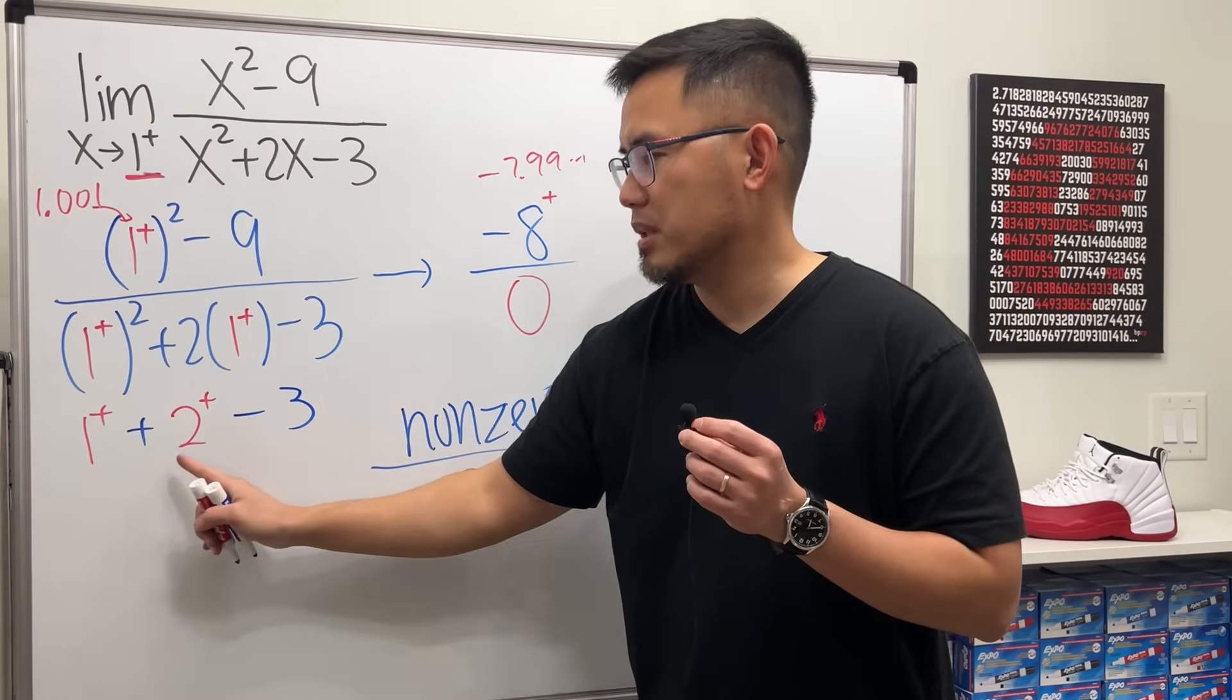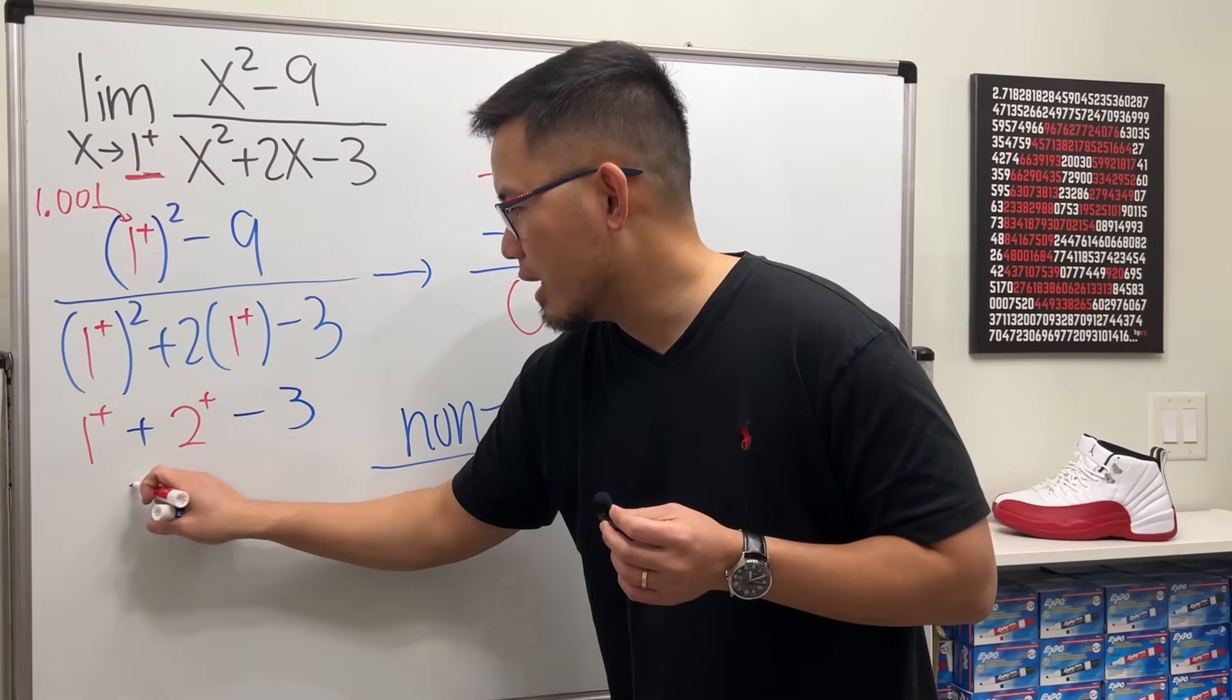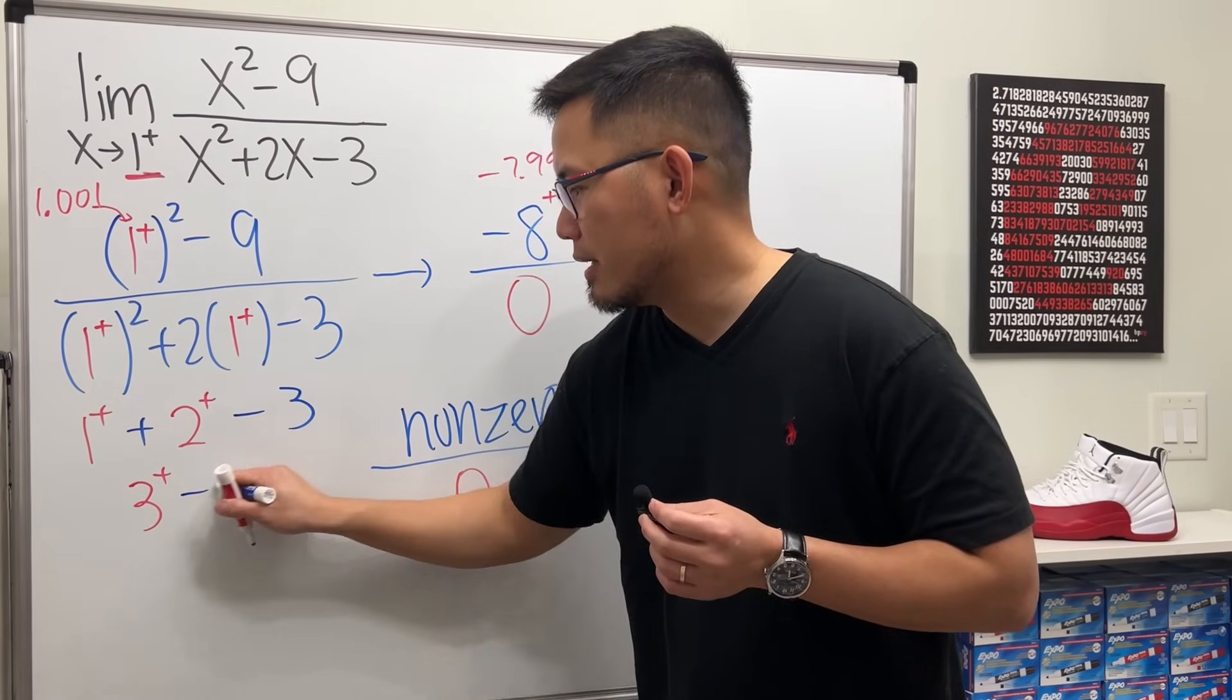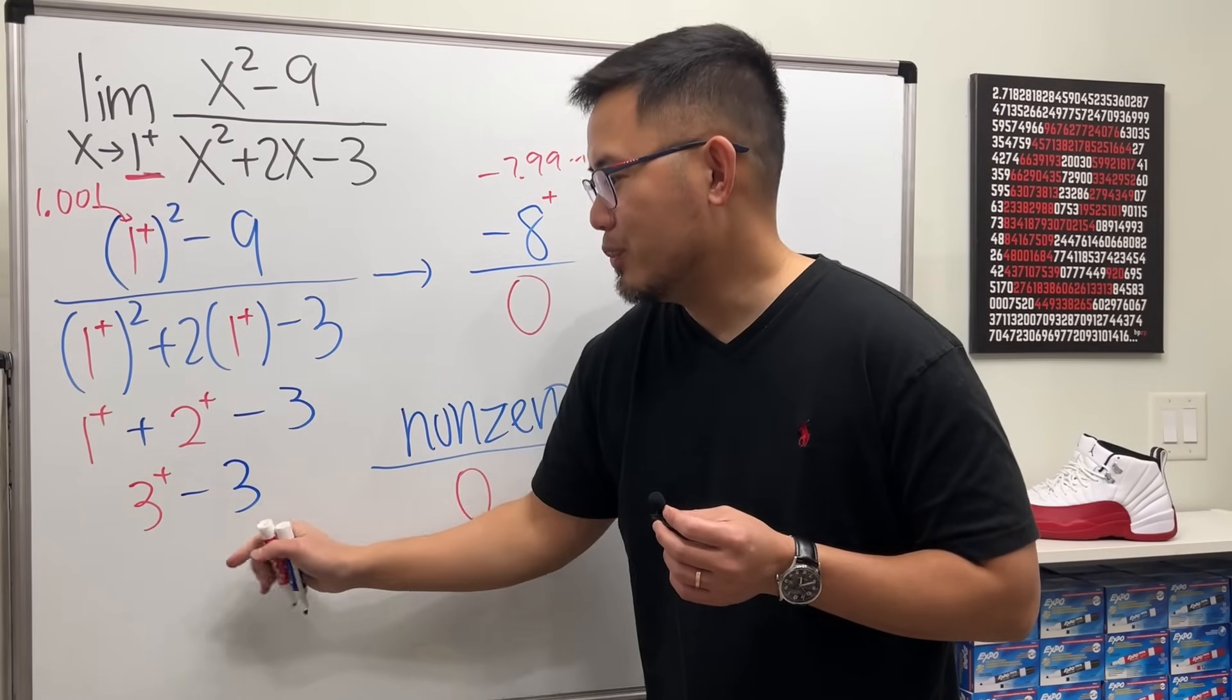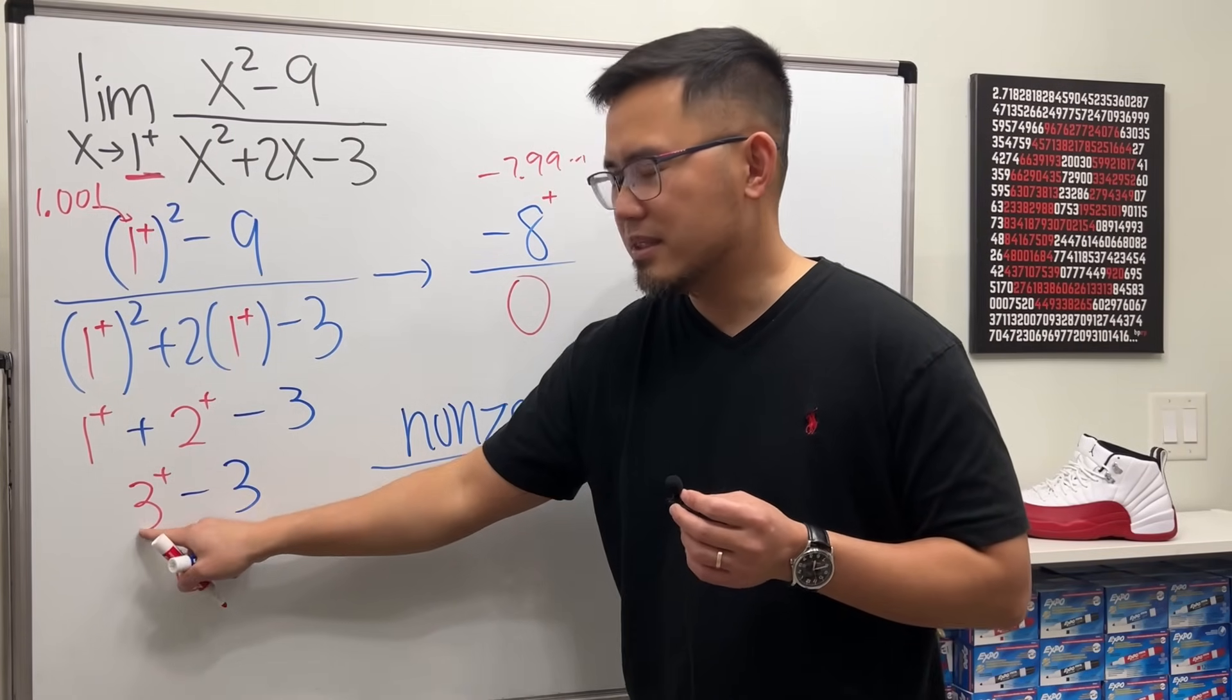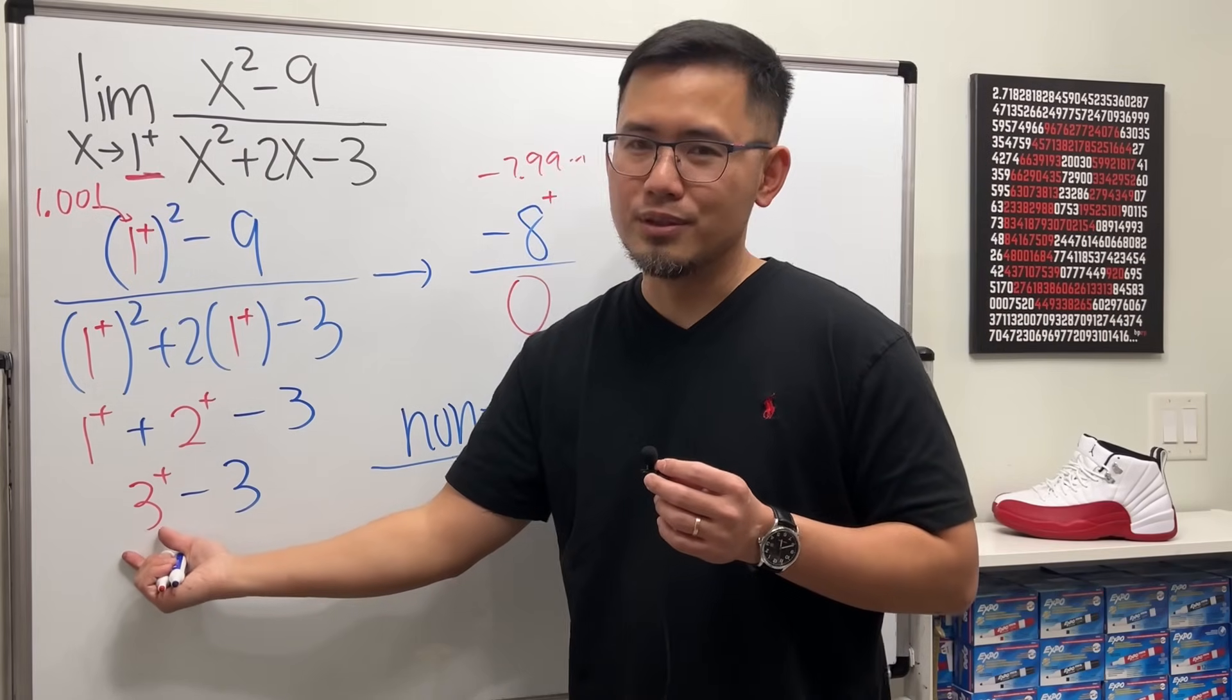This is a little bit bigger than 1 plus a number a little bit bigger than 2, we get a little bit bigger than 3, and then minus 3. 3 minus 3 we know that is equal to 0, but this is technically a little bit bigger than 3. Think about this as 3.001 minus 3. This is a little bit bigger than 0, and that's the key. This is the 0 plus, so here we have a 0 plus.